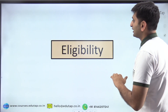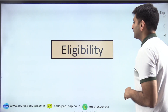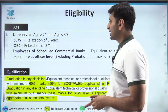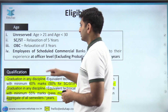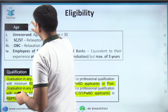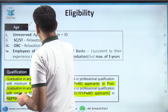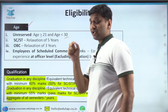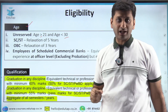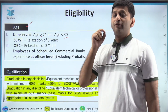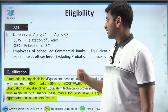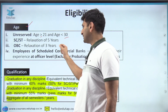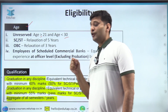Now talking about eligibility. The first criterion is age. Your age has to be between 21 and 30 years for the unreserved category. For SC/ST there is a relaxation of five years, and for OBC there is a relaxation of three years.